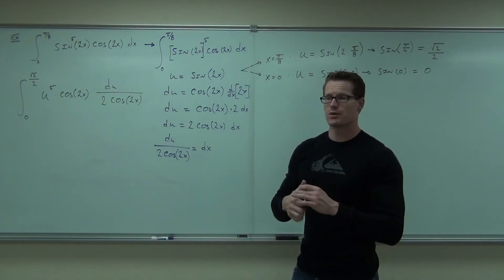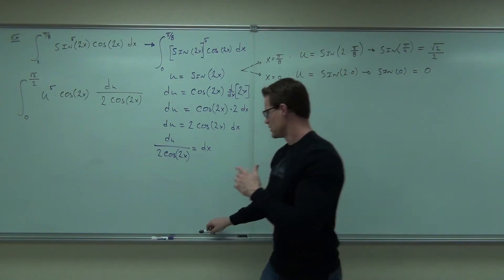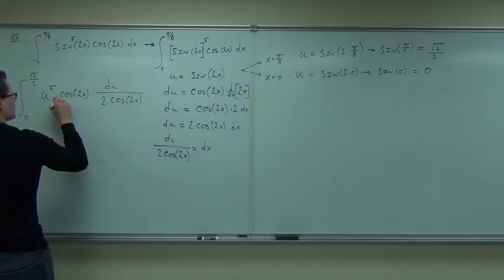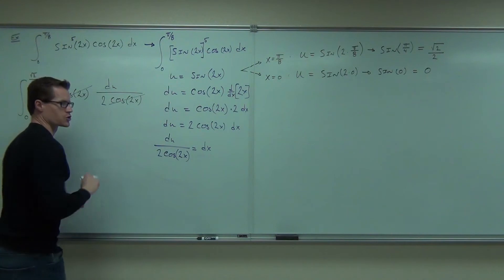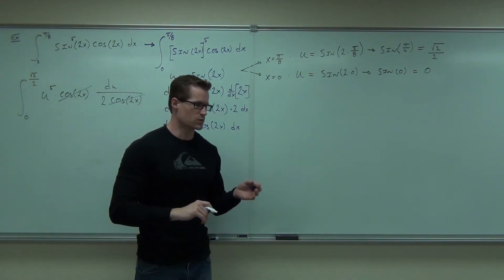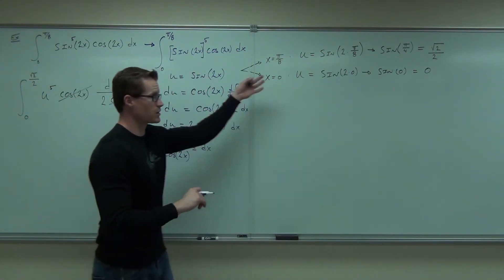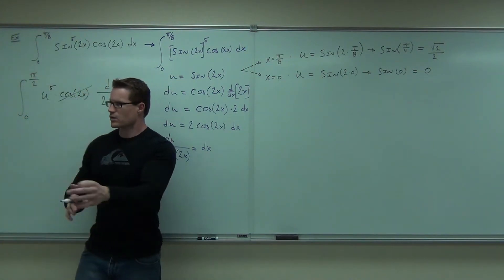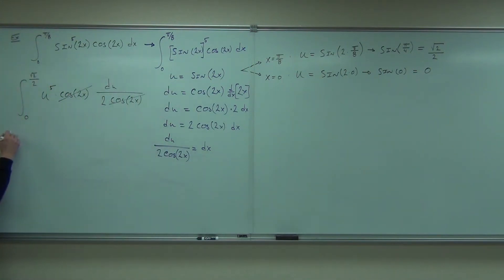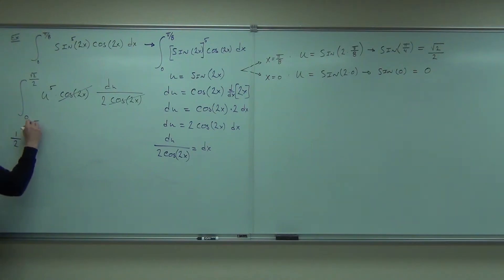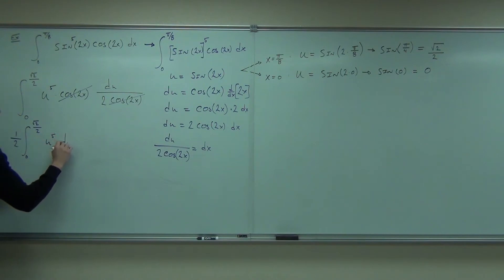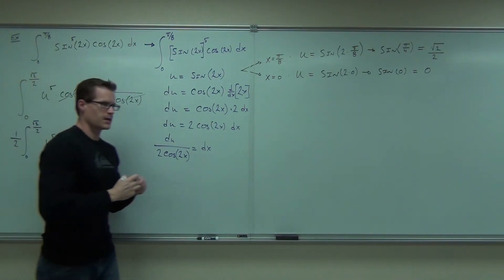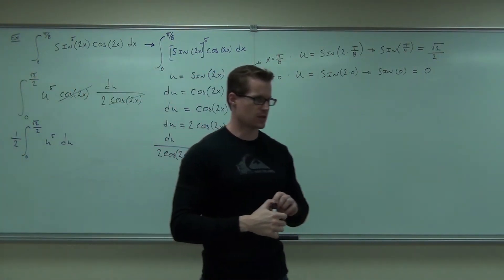You know for sure your substitution worked — you have nothing but u's. You've already done your bounds changes. Pull out one half: the 2 in the denominator becomes a one-half. So we have one-half times the integral from 0 to root 2 over 2 of u to the 5th du. That is a nice, easy integral.